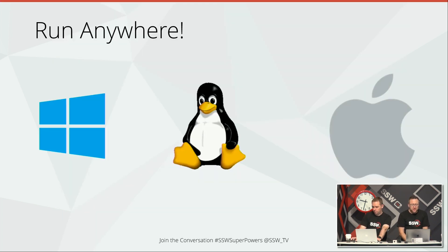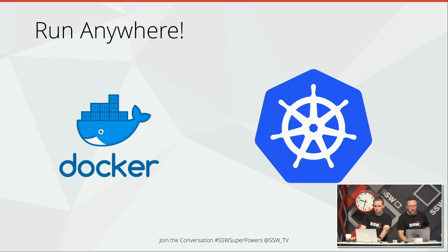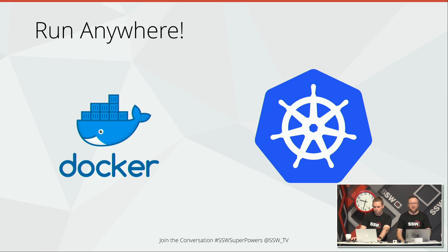With .NET Core, you can run anywhere — inside Windows like you've always been able to, inside Linux, or inside Mac. You can also do things like running inside containers. Docker is the best way of wrapping up an application and saying let's deploy this to a server — or 50 servers. Then Kubernetes builds on Docker to actually orchestrate whole farms and architectures of multiple servers linked together.